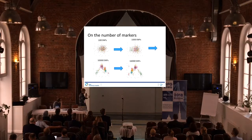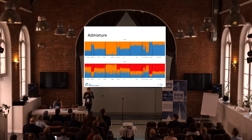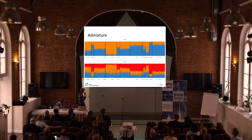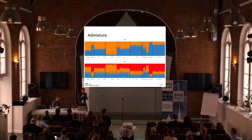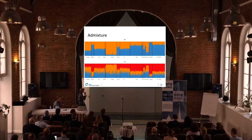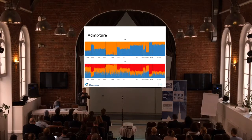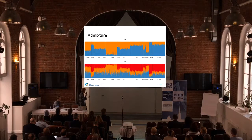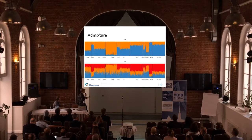The last thing is the admixture analysis. I talked about the STRUCTURE analysis. We have populations from around the world, and each line represents an individual. This analysis assumes some kind of admixing combinations. When we set K equal to two populations for Europe, we see that the Finns kind of stand out, being almost completely one color, while the Basque and other populations are a mix.